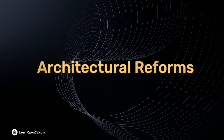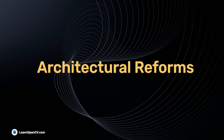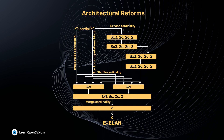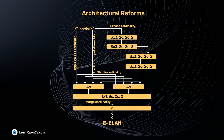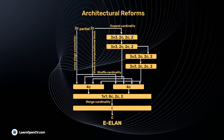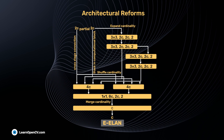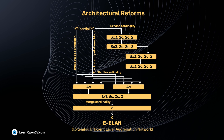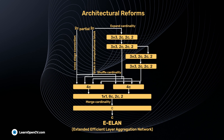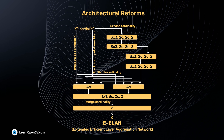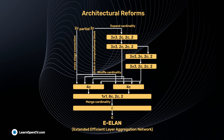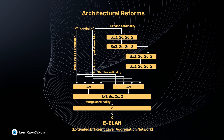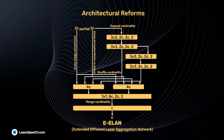Let's understand the architectural reforms in YOLO v7. The backbone used in YOLO v7 is ELAN, which stands for Extended Efficient Layer Aggregation Network. The feature maps learned by this type of network are more robust.